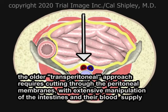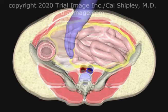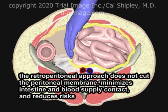The older transperitoneal approach requires cutting through the peritoneal membranes with extensive manipulation of the intestines and their blood supply. The retroperitoneal approach does not cut the peritoneal membrane, minimizes intestine and blood supply contact, and reduces risks overall.